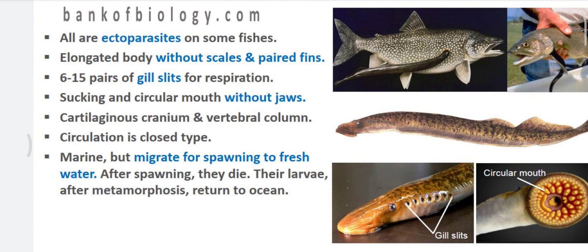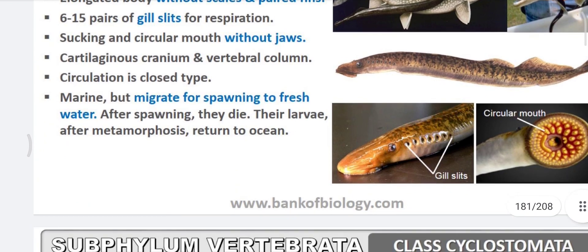They have a sucking, circular mouth without jaws, with which they attach to other animal bodies. The notochord, cranium, and vertebral column are present. Circulation is of the closed type. They are generally marine but migrate for spawning purposes — from marine water to fresh water — which is called anadromous migration.